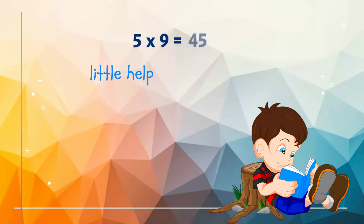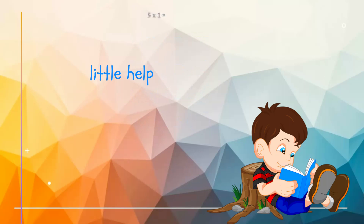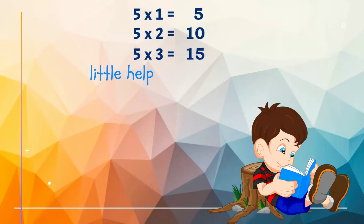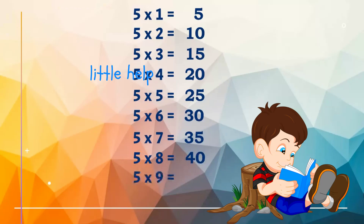Five nines are forty-five. Five ones are five, five twos are ten, five threes are fifteen, five fours are twenty, five fives are twenty-five, five sixes are thirty, five sevens are thirty-five, five eights are forty, five nines are forty-five.